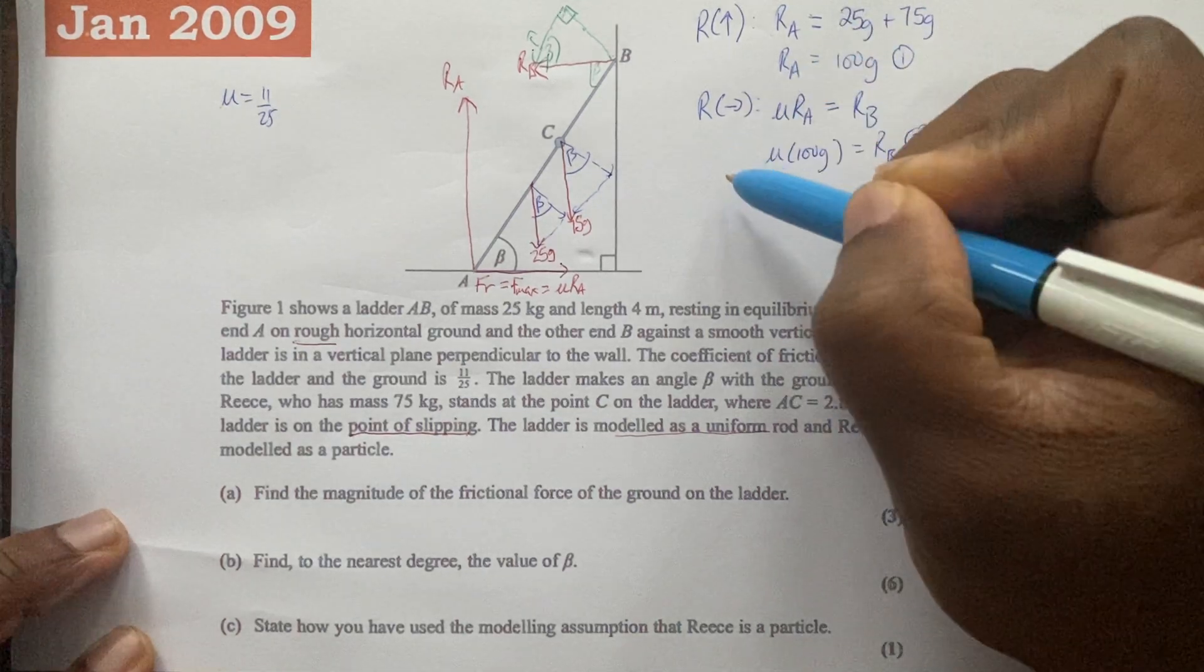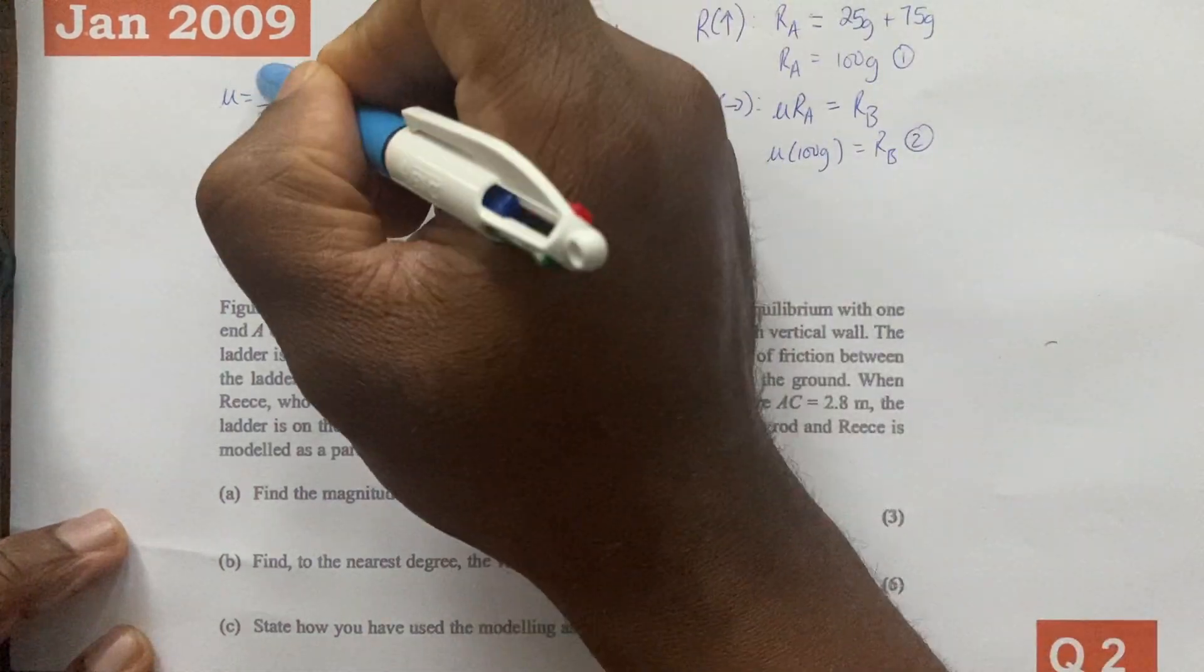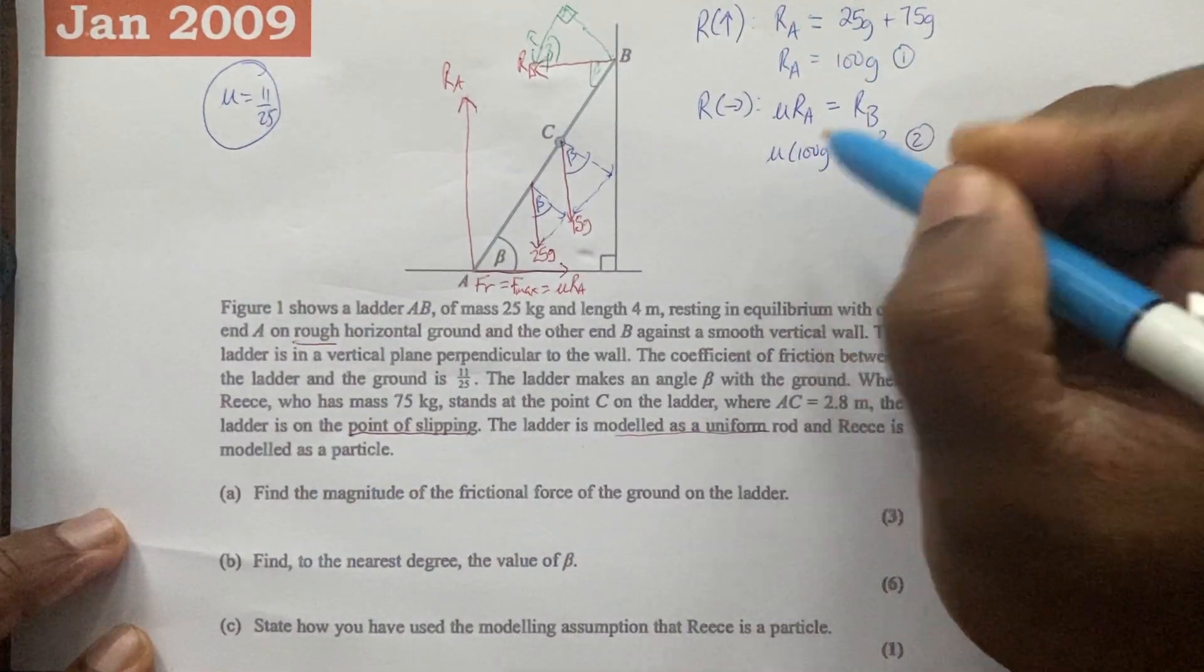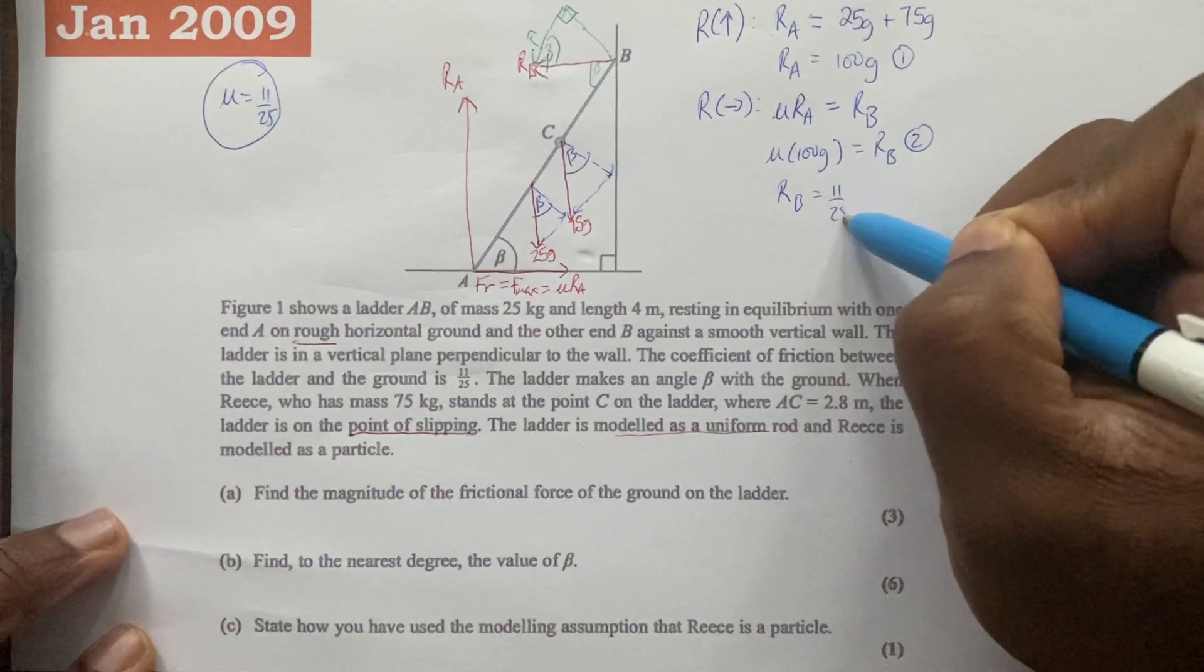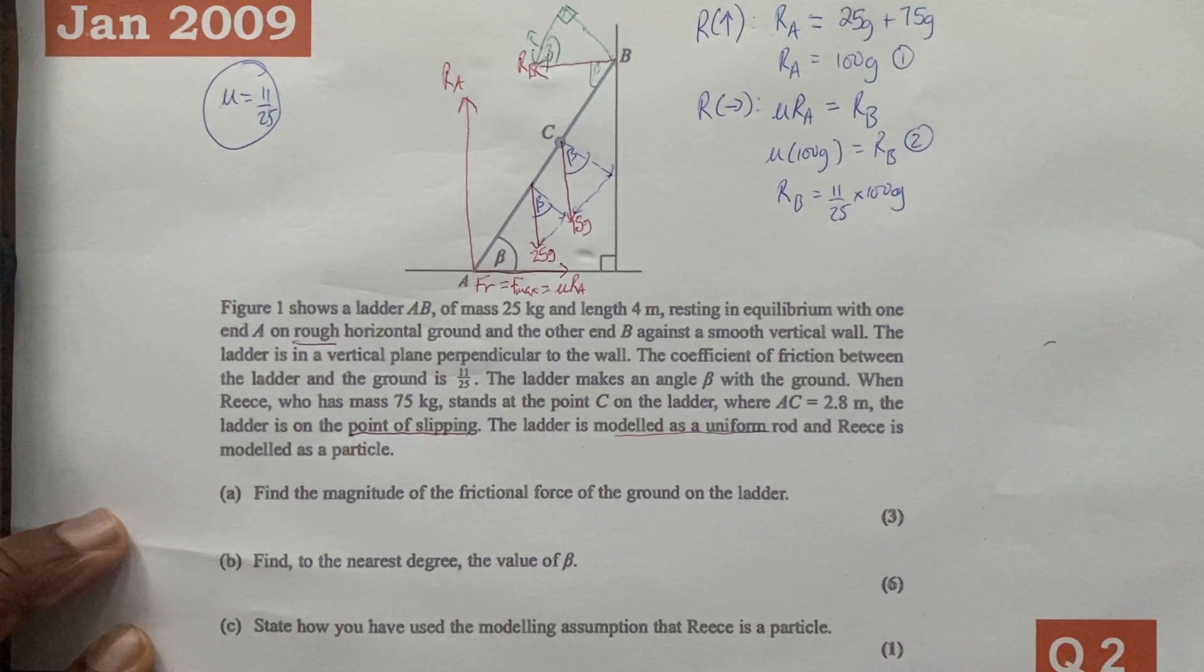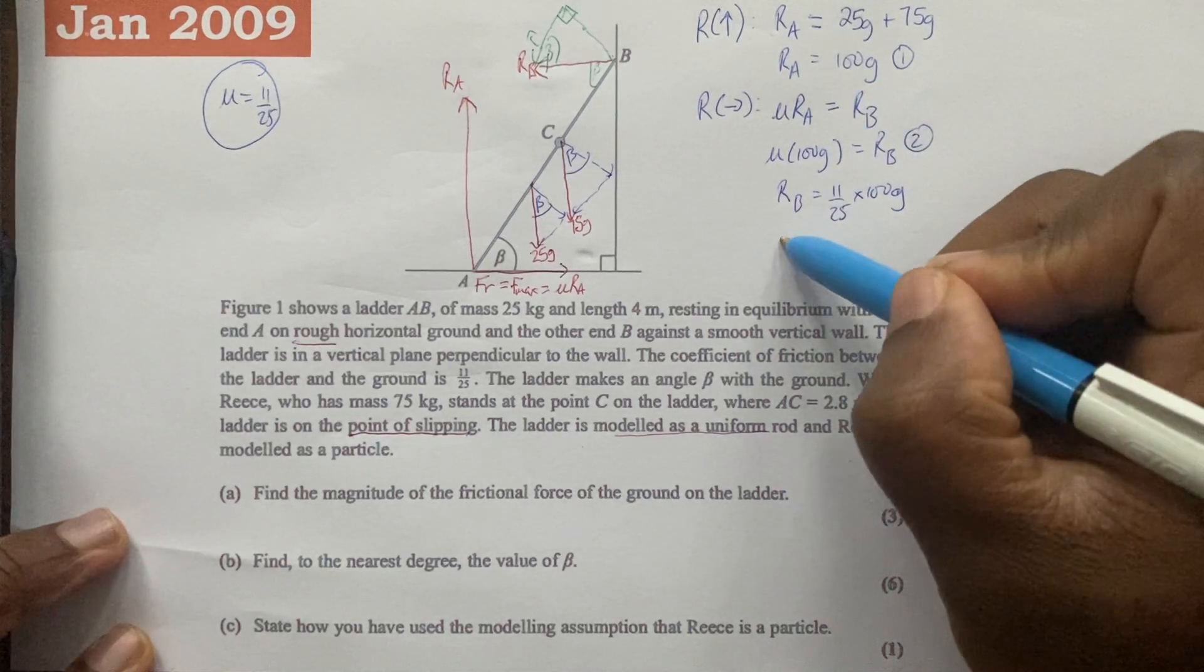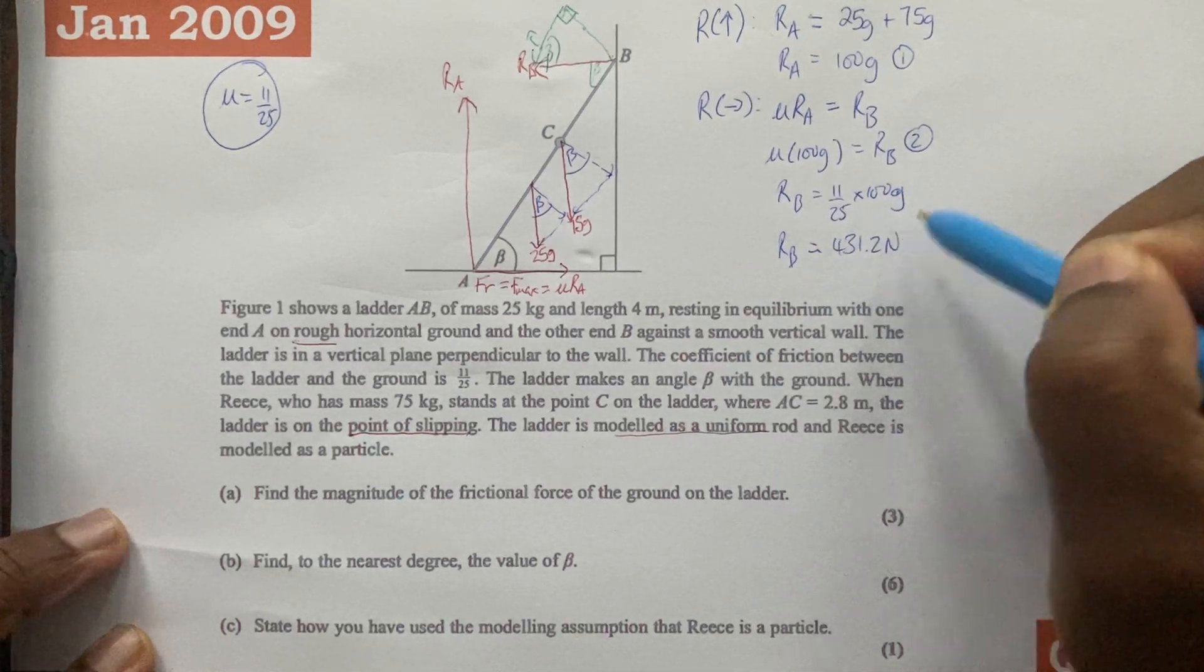We can simplify that further by recalling that mu is 11 over 25, so that means RB is equal to 11 over 25 times 100G. Recall that 100G is 100 times 9.8, so we're going to do 100 multiplied by 9.8 multiplied by 11 over 25. That will give us the value for RB. We will keep the calculator answer for the time being of 431.2 newtons.